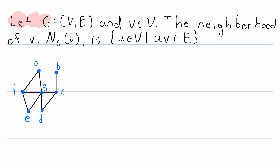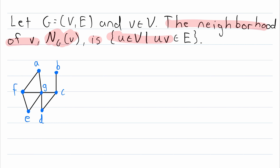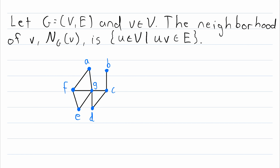We're going to let G be a graph with vertex set V and edge set E. Then let little v be a vertex of G. The neighborhood of v, which is written like this, is the set containing all vertices adjacent to v. And hopefully that seems pretty intuitive.